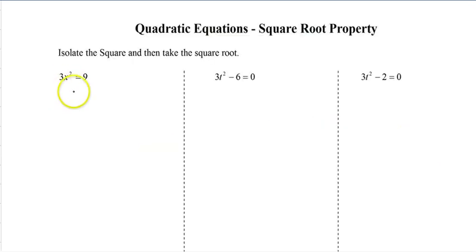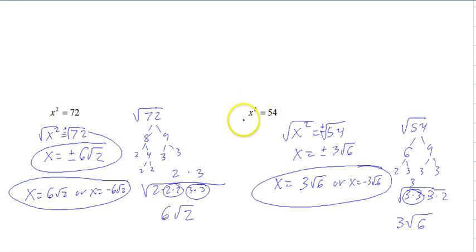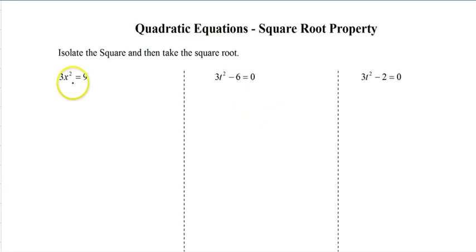Before you do that, you have to make it look like these. You see how it's fully isolated? We need to isolate it, so anything that's around the x squared you have to remove. And then now we can use our square root property.